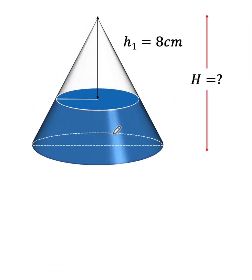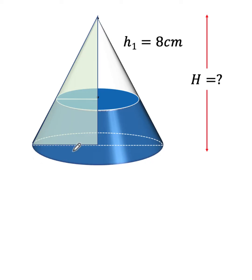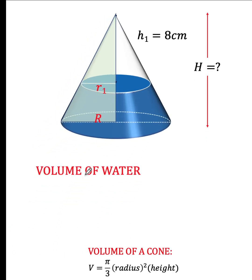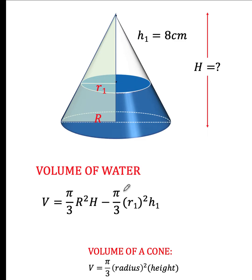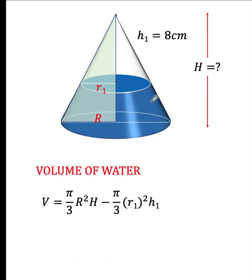Let's concentrate first on the first cone. Let's construct a right triangle where the height of this right triangle is H, and the radius at the bottom of the cone is also the length of the leg at the lower part — let's call that r. We also have another radius at the water level; let's call that r sub 1. We now compute for the volume of the water. The first term gives us the volume of the bigger cone; if we subtract the volume of the upper smaller cone — whose volume is π/3 times r sub 1 squared times its height h₁ — this formula gives us the volume of the blue water.